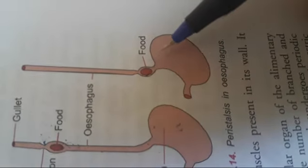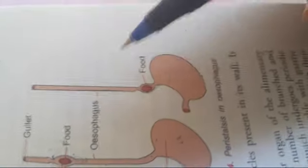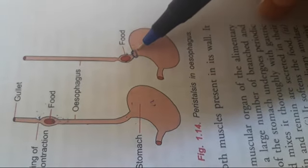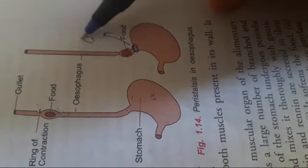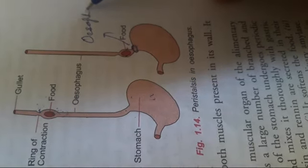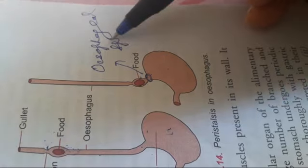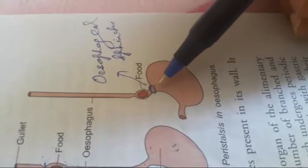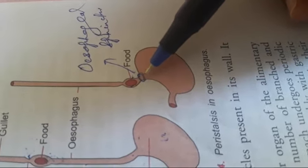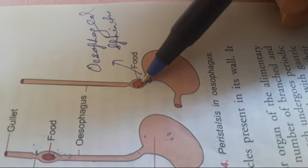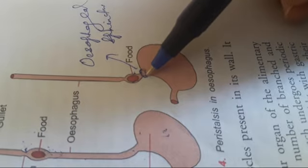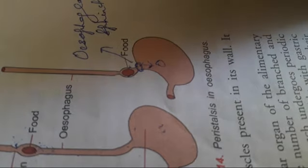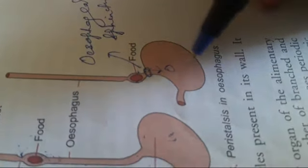The food is brought to the base of the esophagus and pushed into the stomach. At the junction of the esophagus and stomach, there is a ring of muscle called the esophageal sphincter. Normally this sphincter is contracted, keeping the passage closed. When the bolus arrives, it relaxes, creating an opening so the food is pushed into the stomach.